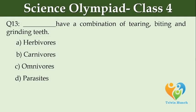Blank have a combination of tearing, biting and grinding teeth: Option A: herbivores, Option B: carnivores, Option C: omnivores, Option D: parasites.